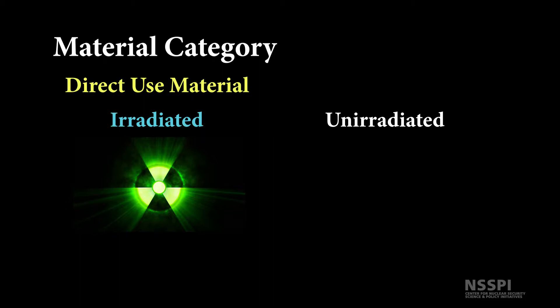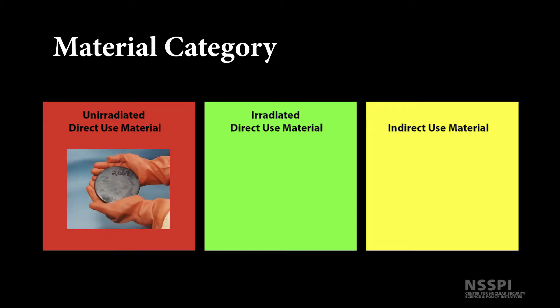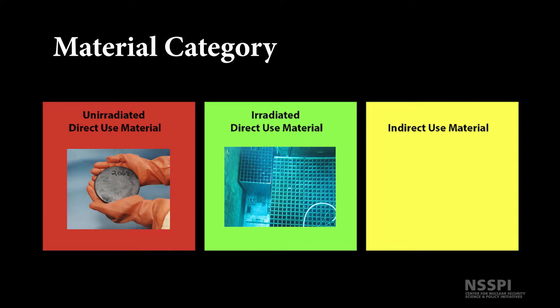For the material category, we also distinguish between irradiated and unirradiated direct-use materials. The radiation level is considered to influence the strategic value of the material, since material with a higher level of radiation is more dangerous to handle, and therefore more difficult to divert and convert into a weapon. Unirradiated direct-use material does not contain substantial amounts of fission products and could be a higher threat for diversion. One example of an irradiated direct-use material would be the plutonium in spent reactor fuel, where high radiation levels make it less desirable as a target for diversion.